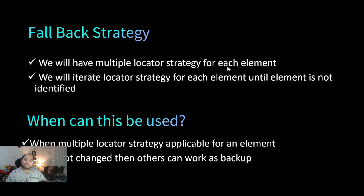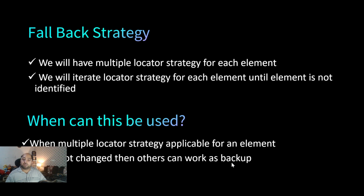What is the fallback strategy and why do we call it that? Corresponding to each element, we define multiple locator strategies — like ID, XPath, class name — depending on priority. We then iterate the locator strategies, and wherever we find the element, we get it and perform the operation. This is helpful when multiple locator strategies are available for an element; if one gets changed, others work as backup. For example, if ID is changed, XPath can work as a fallback.